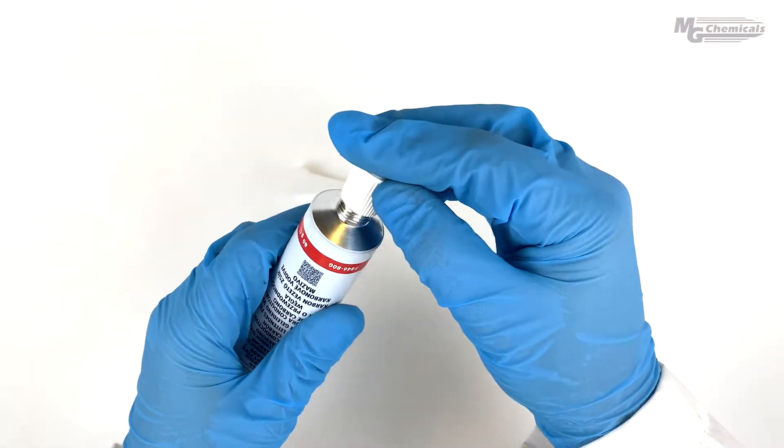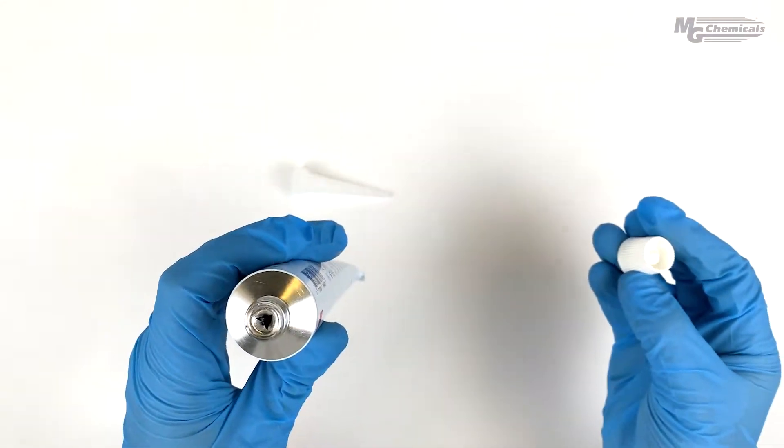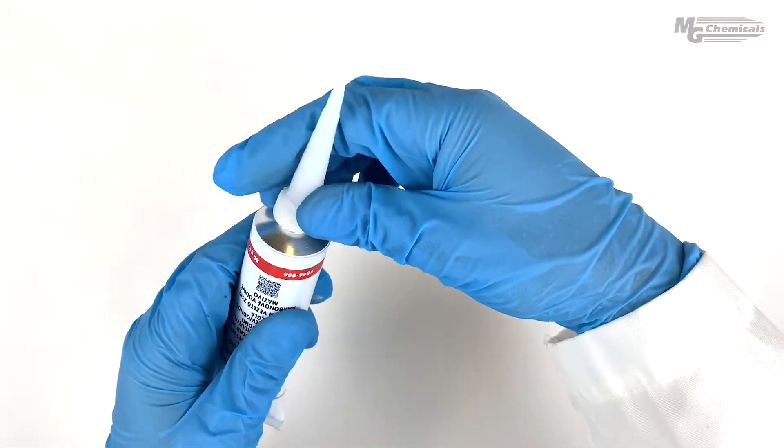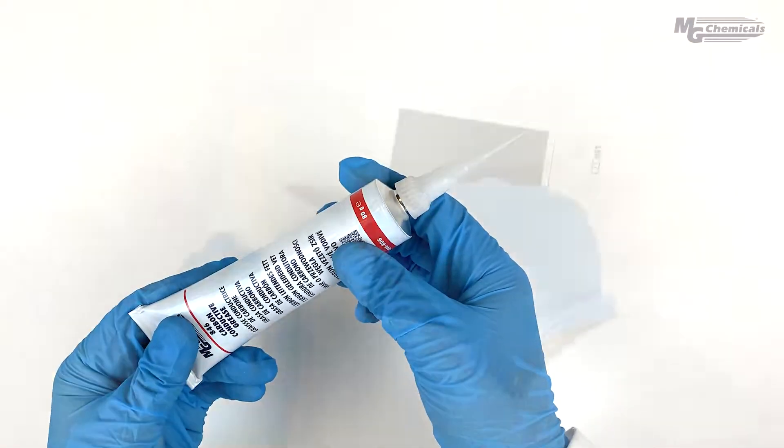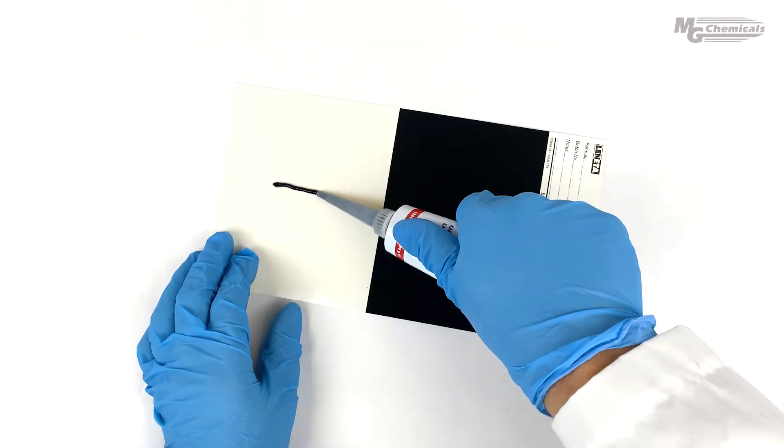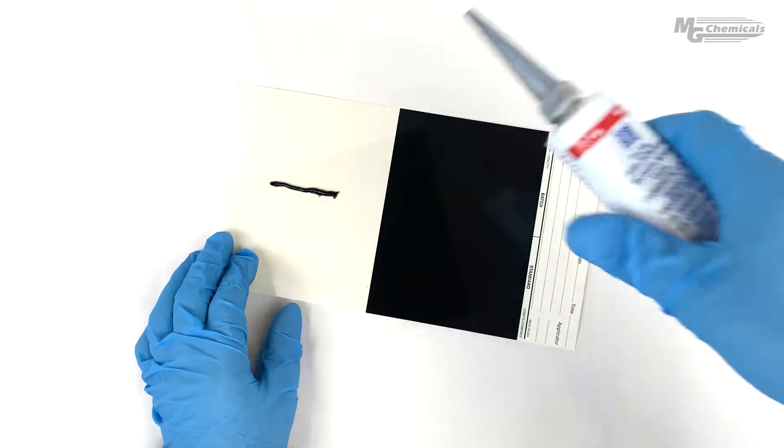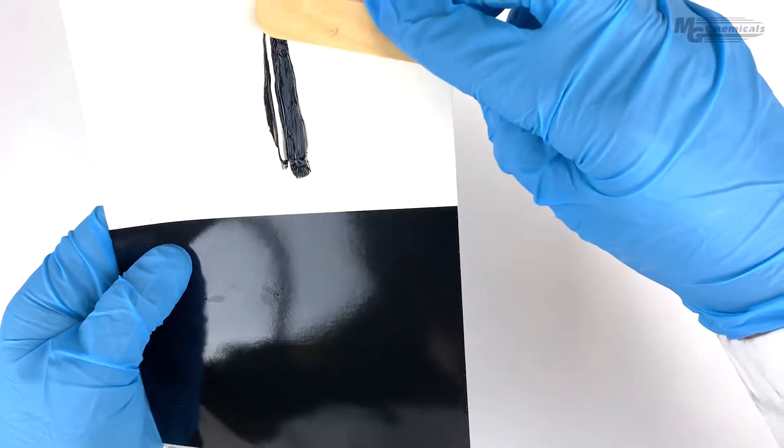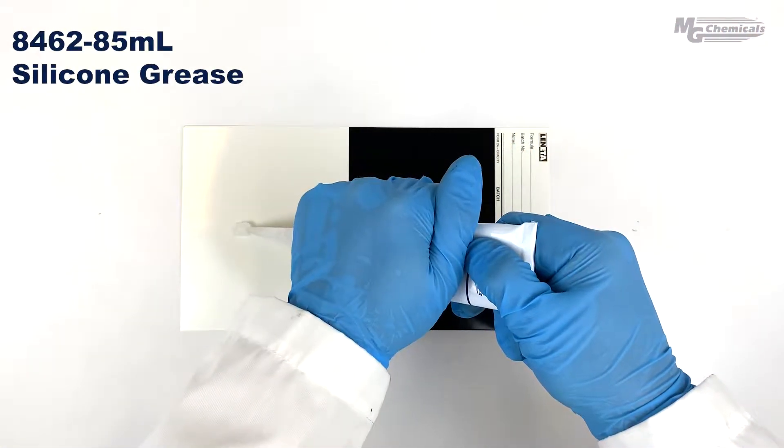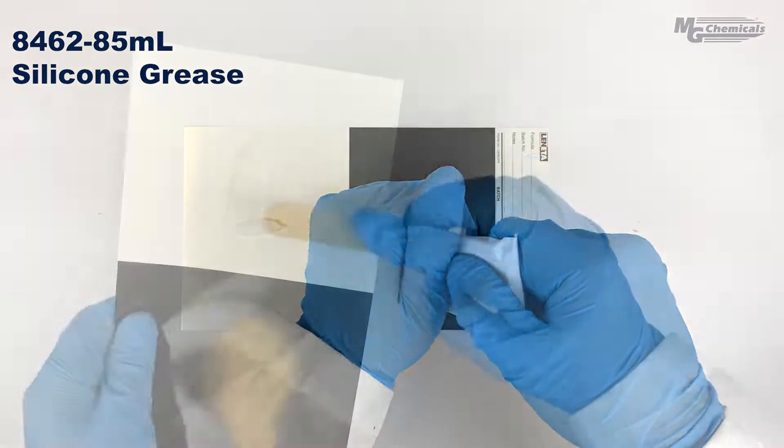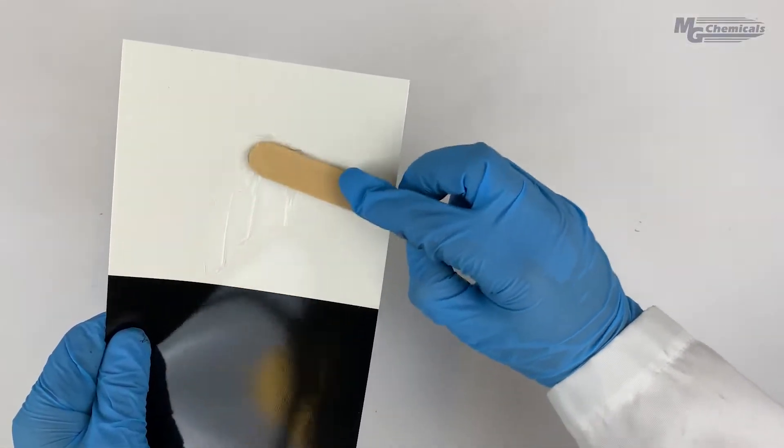Start by simply puncturing the foil cover using the cap, then screw the nozzle into place. Now, you can simply squeeze the tube to get an accurate bead of grease that you can trowel over to get higher surface coverage if needed. The same applies to our 8462 dielectric grease, which is also available in an 85 ml tube.